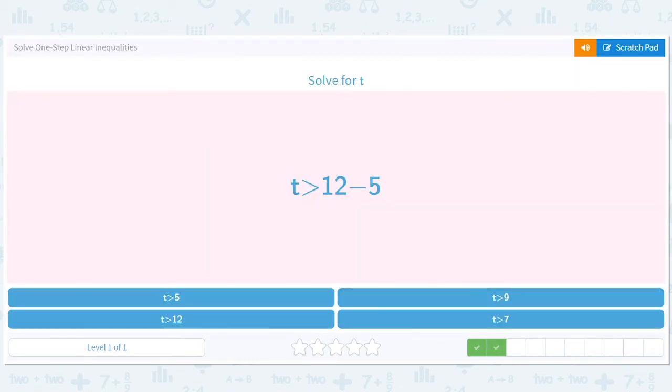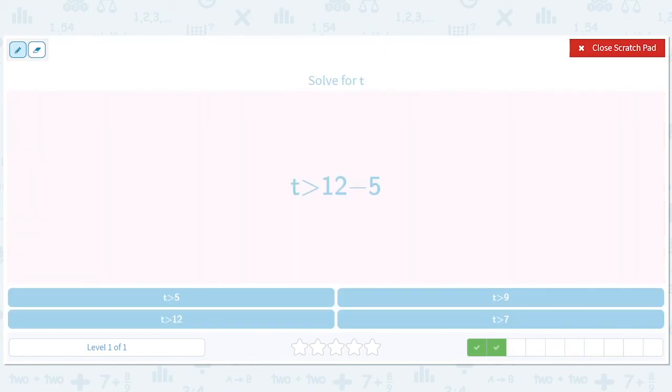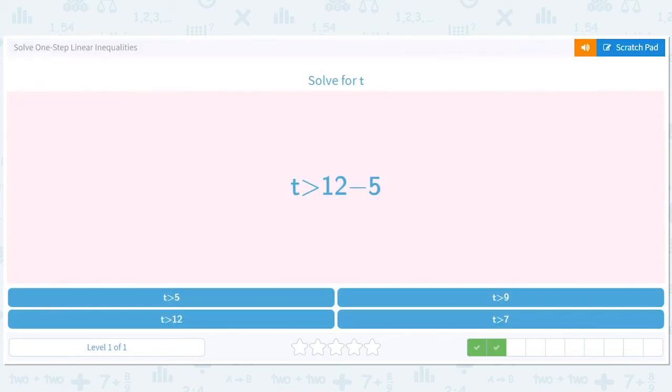T is greater than 12 minus 5. That's a 7. So T is greater than 7. I prefer coffee myself. All right, that's the last one.